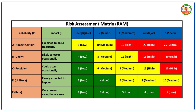The matrix uses colors to highlight risk levels: green (1–6) is low risk — acceptable, monitor as needed; yellow (7–12) is moderate risk — take action to reduce the risk; orange (13–20) is high risk — immediate action is required; red (21–25) is extreme risk — stop work until the hazard is eliminated.